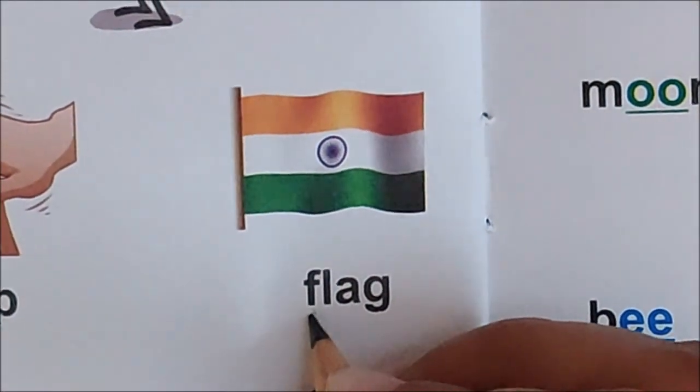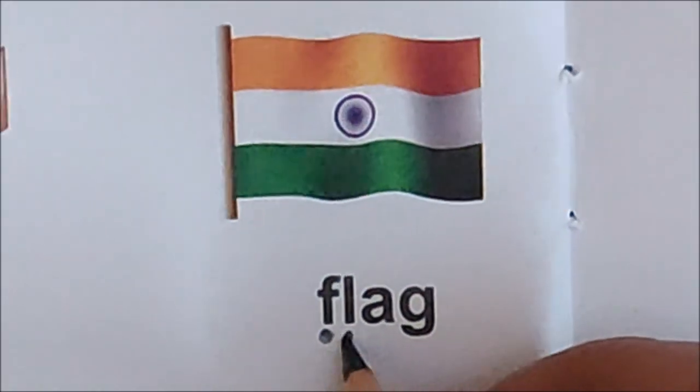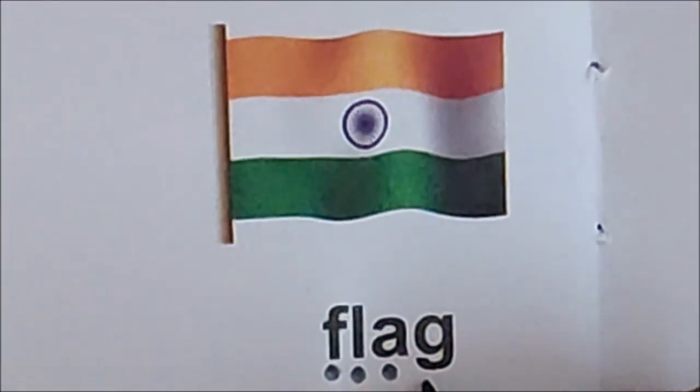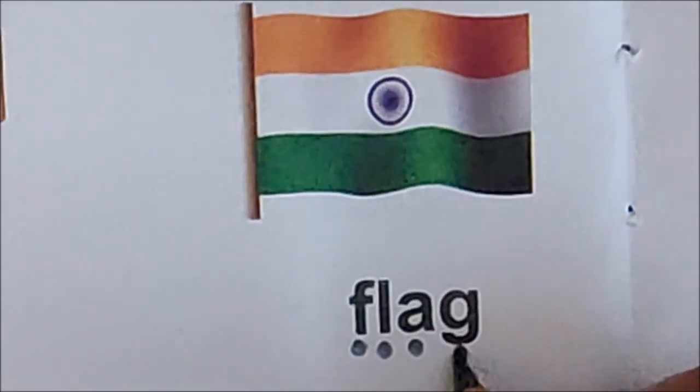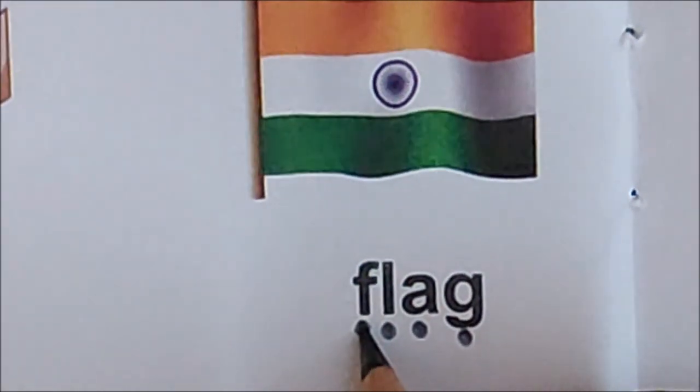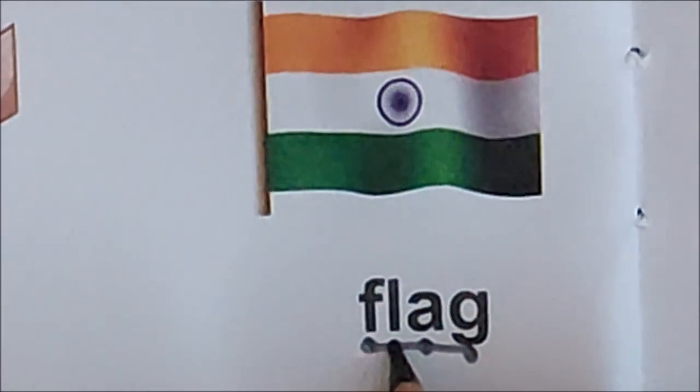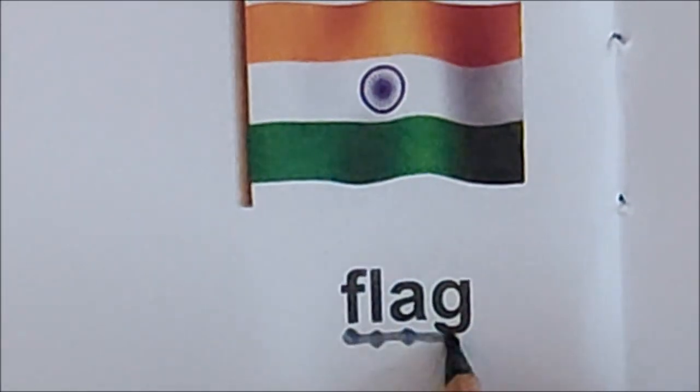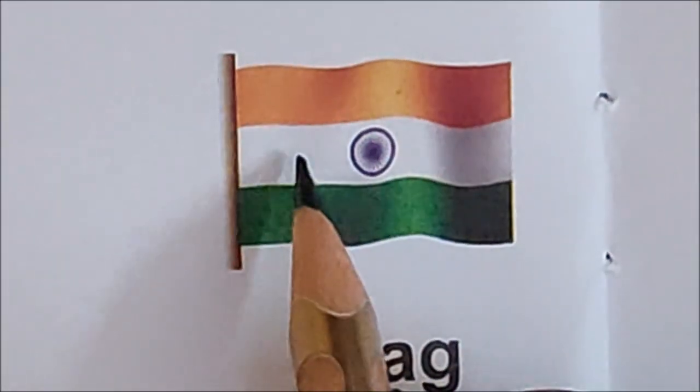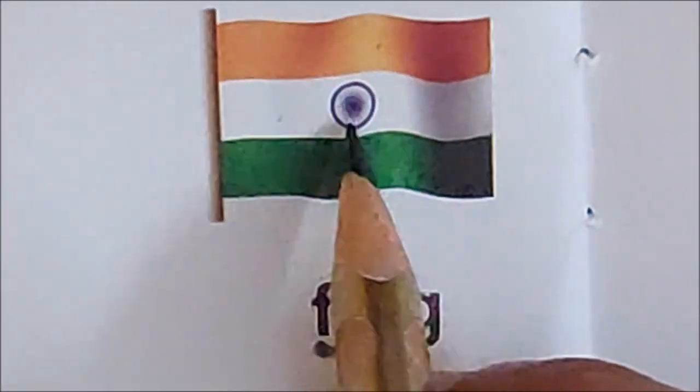What is the first sound, children? Fur. So, put one dot below fur. What is the next sound? Luh. Then, a, what is the last sound? G. Now, let us join all the sounds. Read with me, children, as you join. Flag. Flag. Flag. This is India's flag. With saffron on top. White in the center. Green. The bottom. And this is Ashok Chakra.